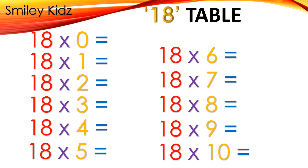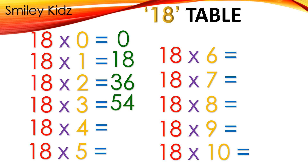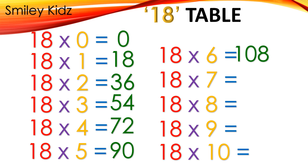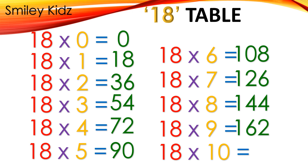Table 18: 18×0=0, 18×1=18, 18×2=36, 18×3=54, 18×4=72, 18×5=90, 18×6=108, 18×7=126, 18×8=144, 18×9=162, 18×10=180.